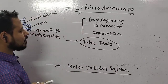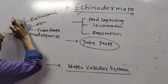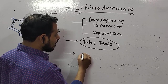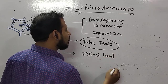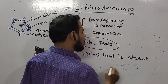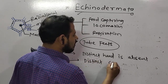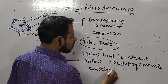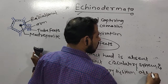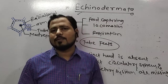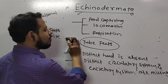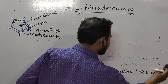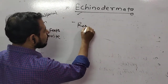Water is released through the tube feet through the arms, so in starfish you can see many tube feet along the arms. In echinoderms, distinct head is completely absent, distinct circulatory system is completely absent, and similarly the excretory system is also completely missing — because all these functions are managed with the help of the water vascular system and tube feet, which is the most striking feature of Echinodermata.